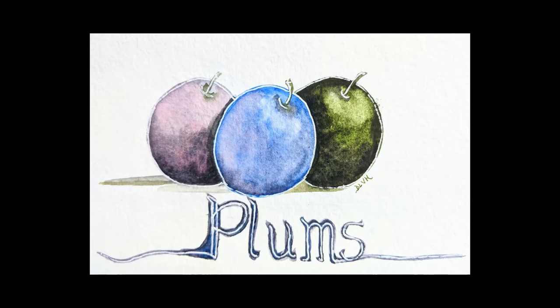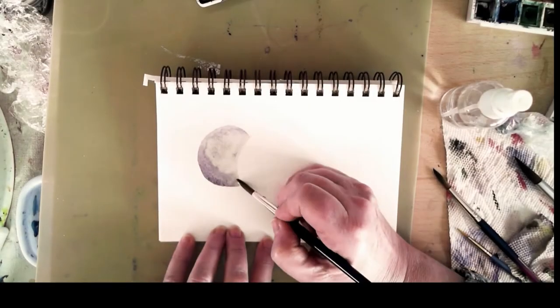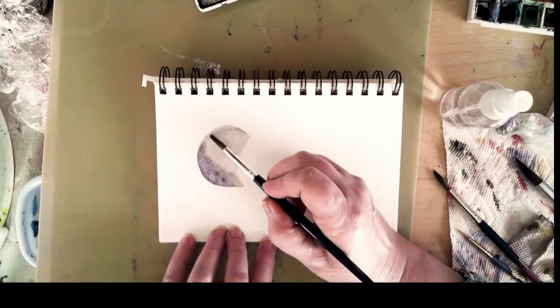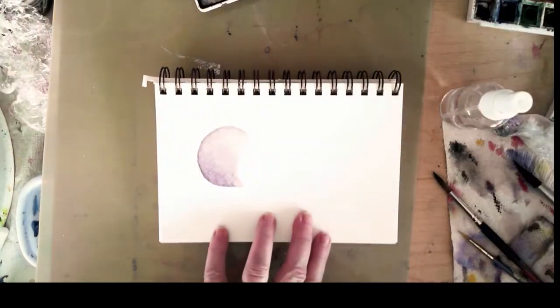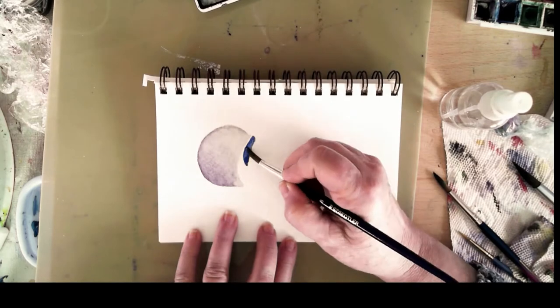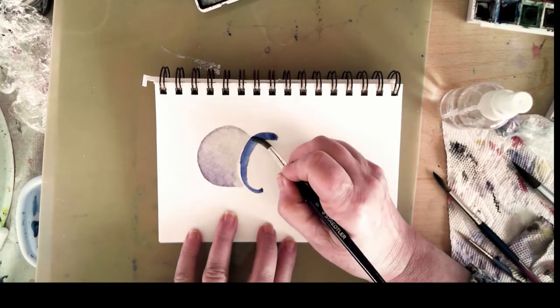This particular painting is done again in the same kind of paper as I did the other projects. It's the Strathmore Visual Journal cold press watercolor paper. It's a perfect size for these kinds of exercises.